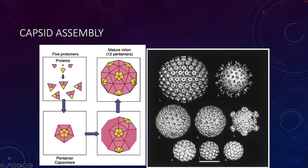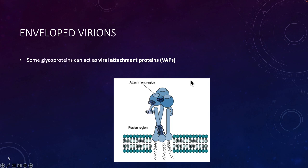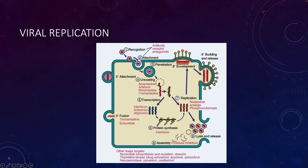Generally, capsids are made of repeated subunits, producing sometimes really beautiful structures visible via electron microscopy. In enveloped virions, glycoproteins act as viral attachment proteins — how the virus attaches to the host cell. When a virus enters a host cell, it recognizes and attaches to a host cell protein, then penetrates into the cell, followed by uncoating where the viral genetic material is released. Where that genetic material goes depends on the type of virus.